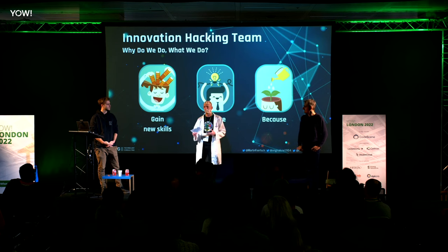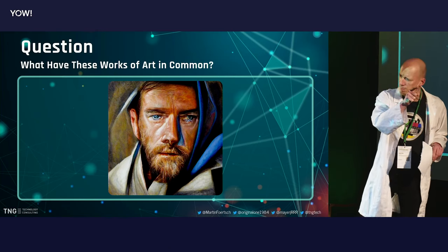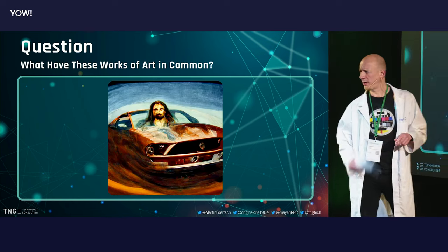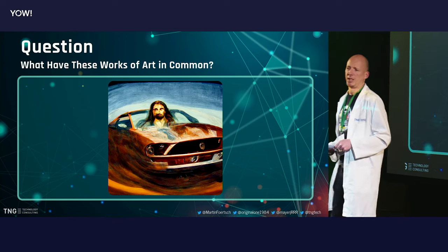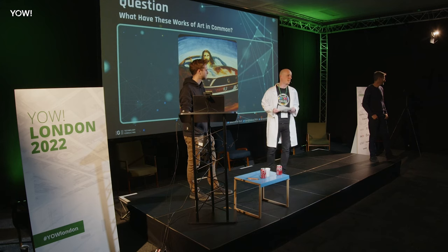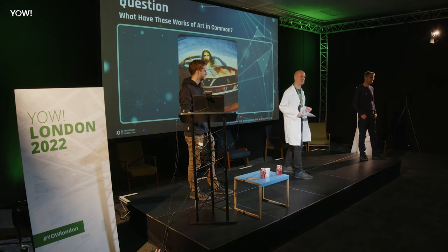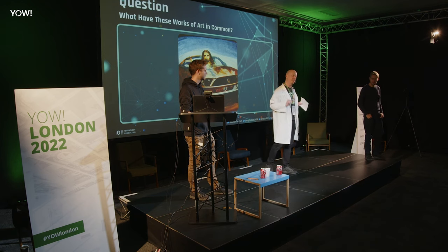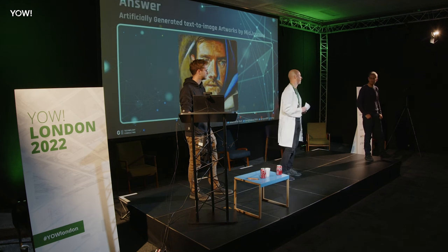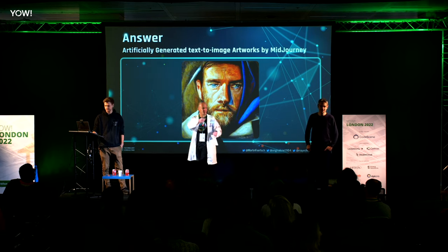This is our content today — we want to speak about AI. I want to start with a question to the audience: what do these two pictures have in common? These are pictures which are artificially generated based on MidJourney. It's a text-to-image AI, a deep neural network — you put text in and this comes out. The input for the first picture was 'an oil painting of Obi-Wan Kenobi,' and this is the MidJourney output.